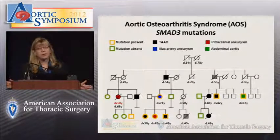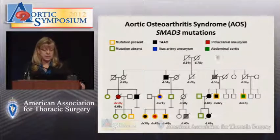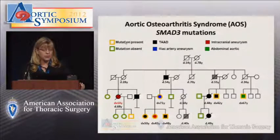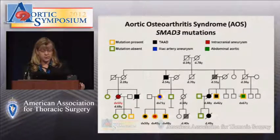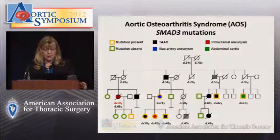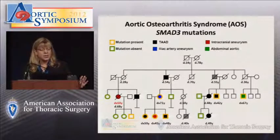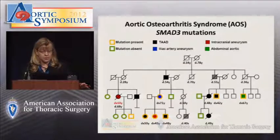The next two syndromes have been described just in the past year. Osteoarthritis syndrome is due to mutations in a gene called SMAD3. These patients have ascending disease and very early onset osteoarthritis. Looking at family pedigrees, individuals with the mutation can present with thoracic aortic disease, intracranial aneurysms, iliac aneurysms, and abdominal aneurysms — the disease affects multiple vascular beds. For patients with SMAD3, we recommend aggressive imaging similar to Loeys-Dietz. We don't currently have evidence that these patients dissect early, so we're recommending management more along the lines of Marfan syndrome for the ascending aorta.